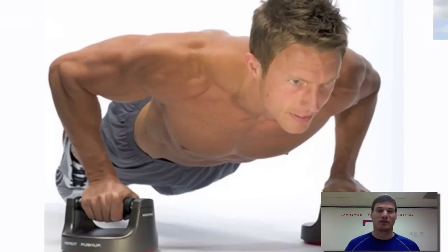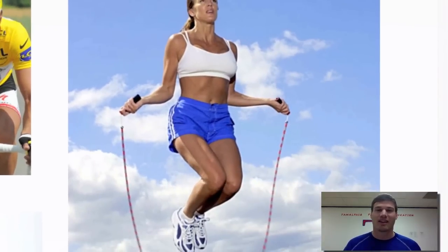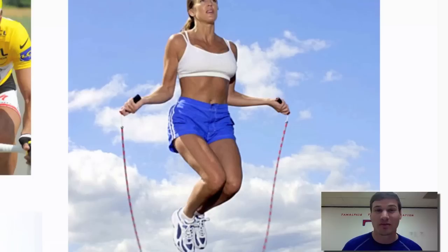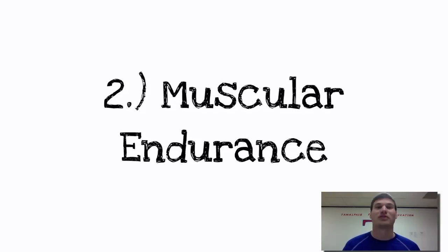Next we have a guy doing push-ups doing lots of repetitions, another bicycle rider, and someone jump roping. Think about all three of these pictures — what's the resistance? Low resistance. So that makes me think this would be muscular endurance. That's the second component of fitness.